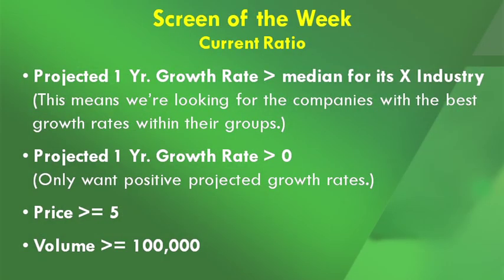We're also looking at growth rates, which is a very important measure. We want the projected growth rate to be greater than the median for its industry — finding the best companies within the best groups — and at the very least, the projected growth rate has to be above zero, so there has to be some real growth. All of these criteria are applied to companies trading over $5 a share with at least 100,000 shares traded daily.